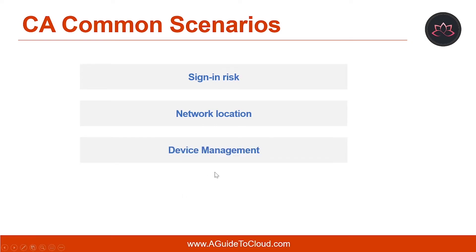The next scenario would be Device Management. In Azure AD, users can access cloud apps from a broad range of devices including mobile and also personal devices. The fourth scenario is Client Application. Today you have access to many cloud apps using different app types such as web-based apps, mobile apps, or desktop apps. What if an access attempt is performed using a client app type that causes known issues?